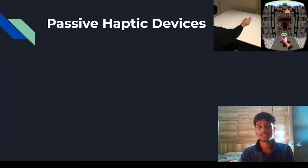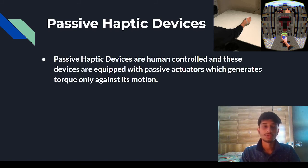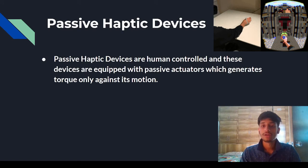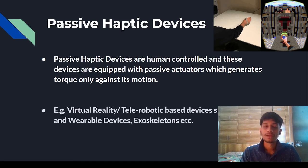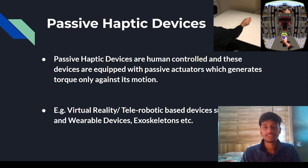Passive haptic devices are human-controlled and are equipped with passive actuators which generate force only against their motion. For example, virtual reality and telerobotics-based devices such as gloves, wearable devices, exoskeletons, and similar equipment.